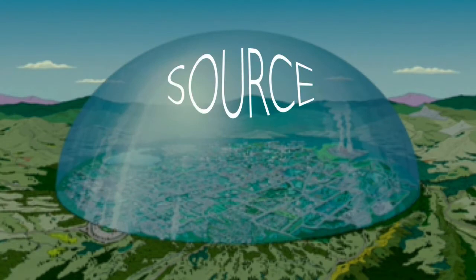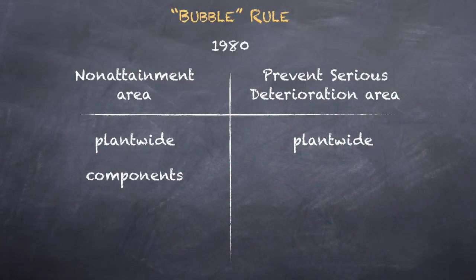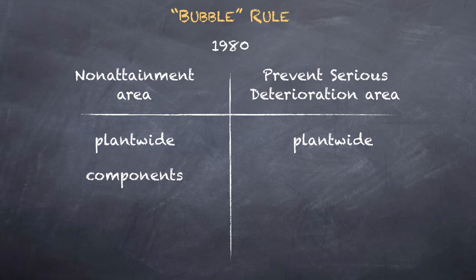A grouping of polluting activities on adjacent properties but under common control counts as a source — but what about the components within that grouping? Are they counted as sources too? If a permit is required for each new or modified source, then an interpretation that penetrates the bubble will subject polluters to stricter regulation. In 1980, the EPA promulgated the so-called bubble rule. The EPA already distinguished between non-attainment areas, where the air was very dirty, and Prevention of Serious Deterioration (PSD) areas, where the air was cleaner but could get worse.